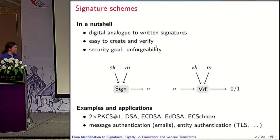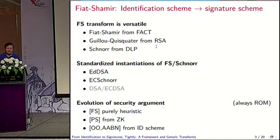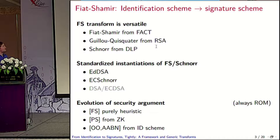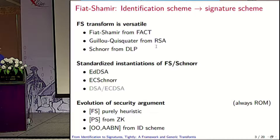If we focus on the latter four, they have something in common. Namely, at least two of them come from the Fiat-Shamir transform of some identification scheme into a signature scheme. This is a general principle for signatures — a conversion from identification to signature schemes. The Fiat-Shamir transform was proposed in 1986 and it's quite versatile because it takes a big class of identification schemes and makes signature schemes out of them. We have signatures based on factoring, on RSA, on the discrete logarithm problem.